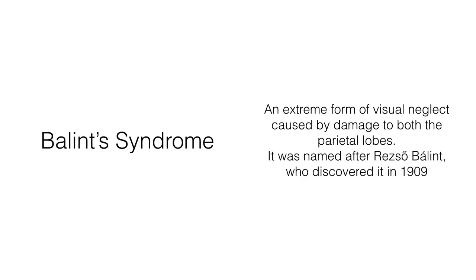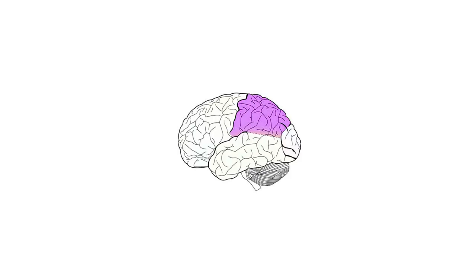Balint syndrome is an extreme form of visual neglect caused by damage to both parietal lobes. It was named after Renzo Balint who discovered it in 1909. The area highlighted in purple is the parietal lobe. You have one on either side, located behind the central sulcus — the line which divides the frontal and parietal lobes. If you draw a line from your ear over the top of your head to your other ear, that is roughly where the central sulcus, also known as the central fissure, is located.